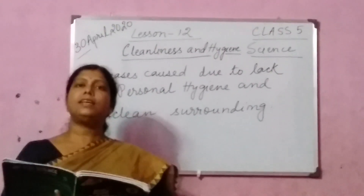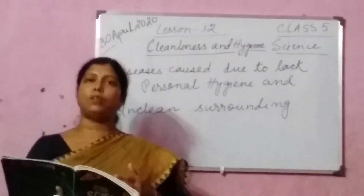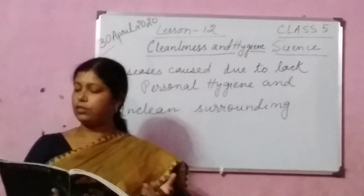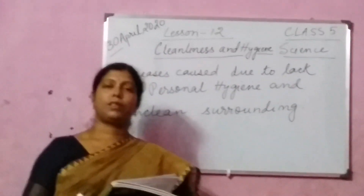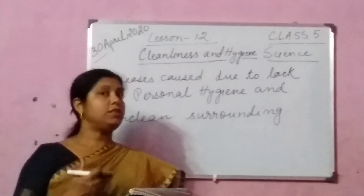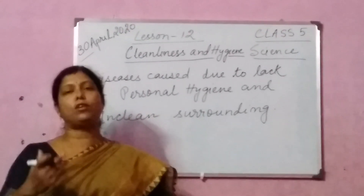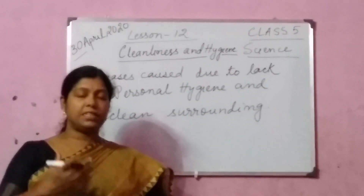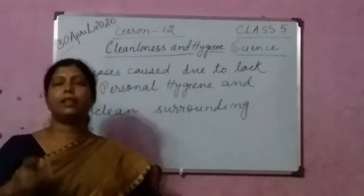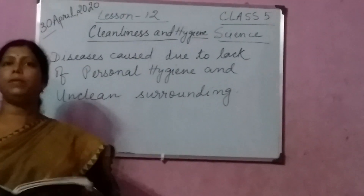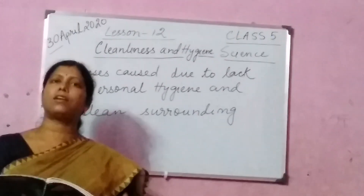These diseases which spread easily from one person to another are called communicable diseases. Through air, through food, water, or through insects — the diseases which can enter our homes and enter our body are known as communicable diseases. Now how are communicable diseases caused?